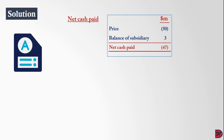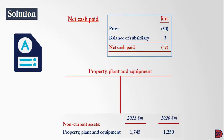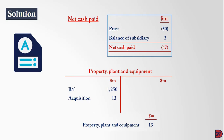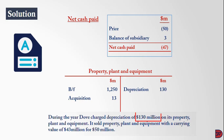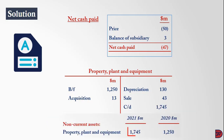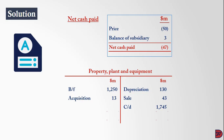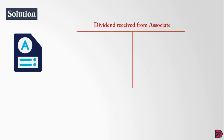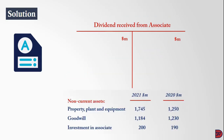For the property, plant and equipment working: opening balance was 1 billion 250 million. Add acquisition through subsidiary of 13 million. Subtract depreciation of 130 million and the net book value of assets sold of 43 million. The closing balance was 1 billion 745 million dollars, which means purchases during the year were 655 million dollars.